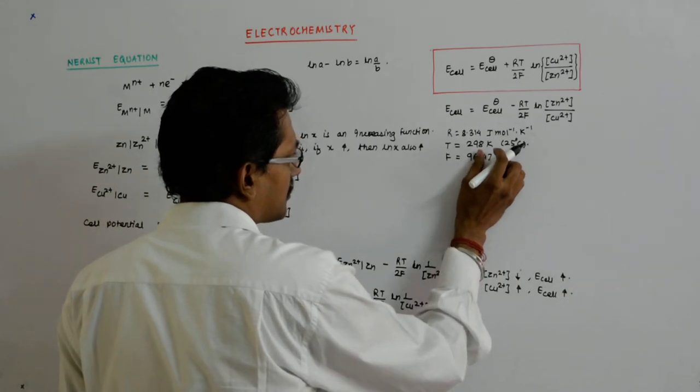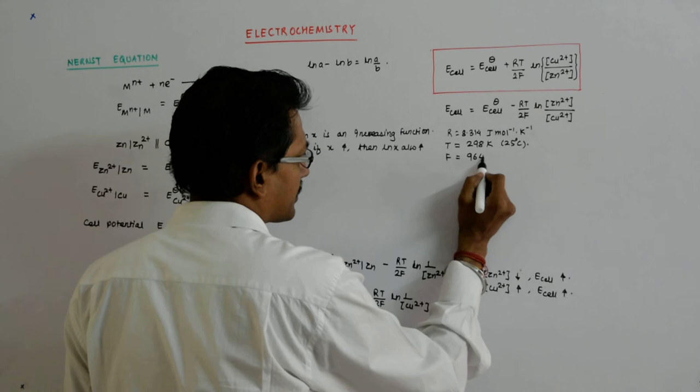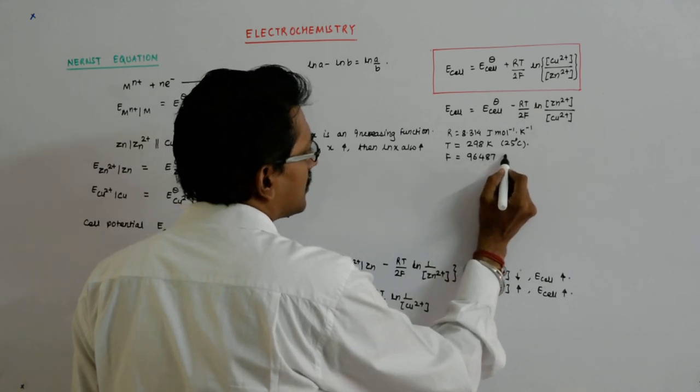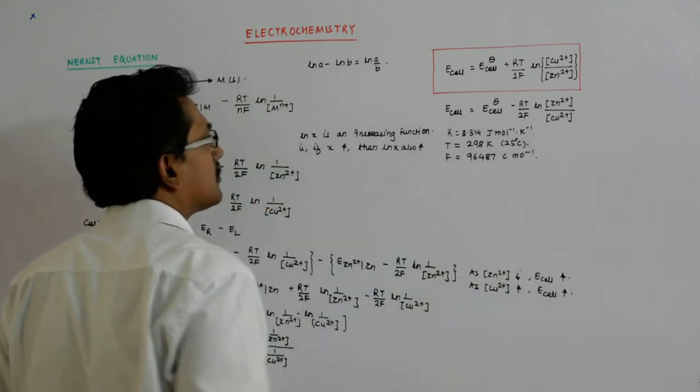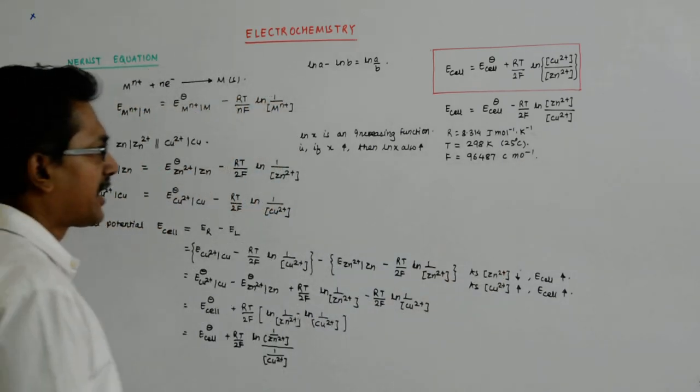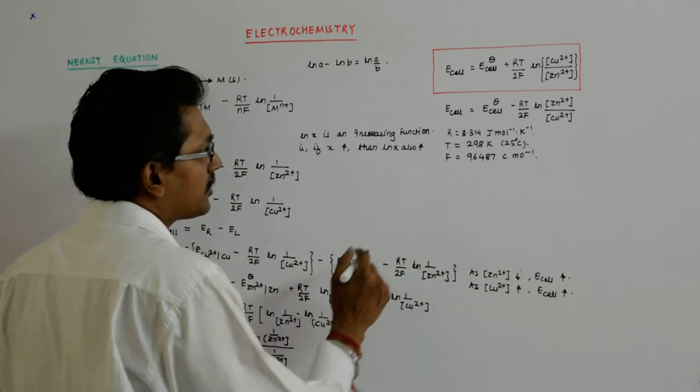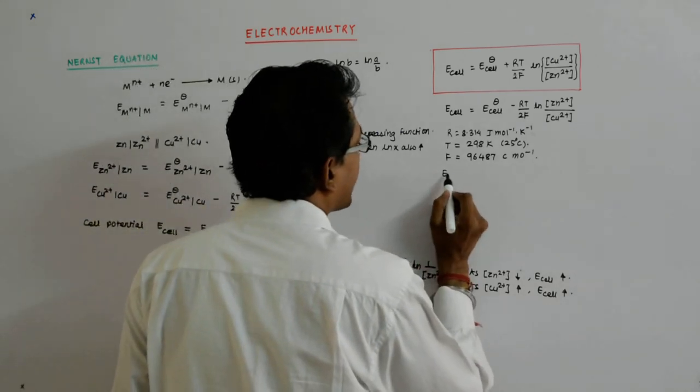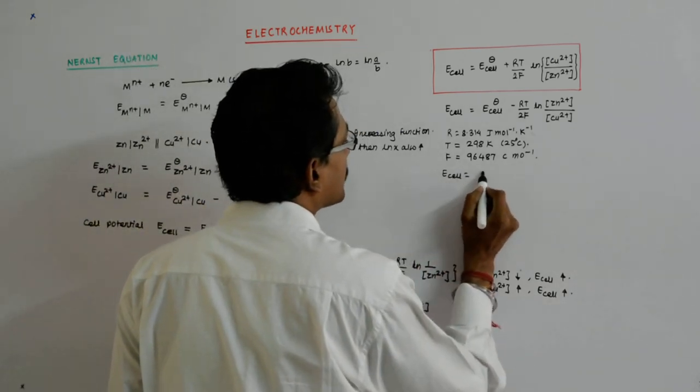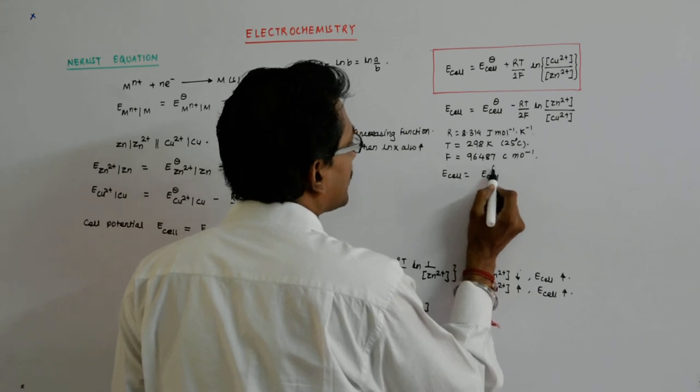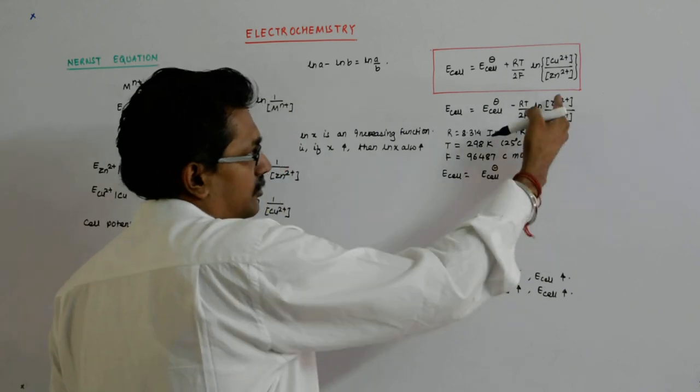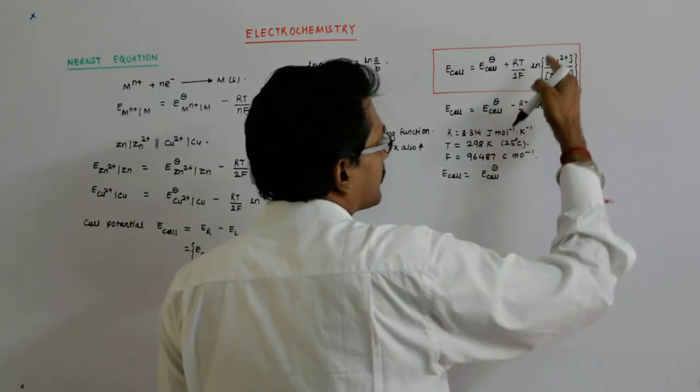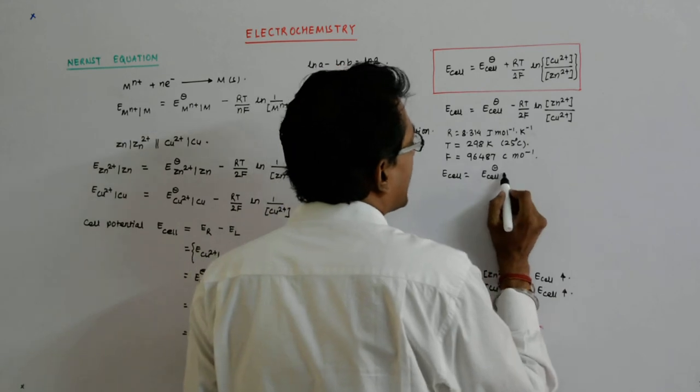96487 coulomb per mole. So if I put these values, what do I get? I get E_cell is equal to E_cell... here they have written left upon right, so you have to keep that in mind.